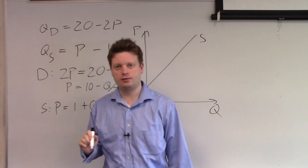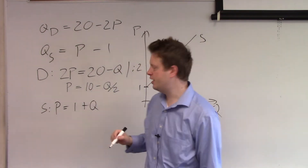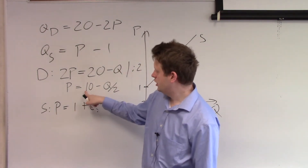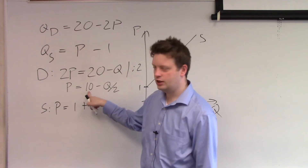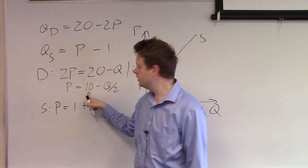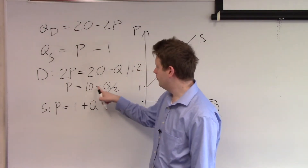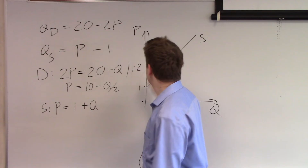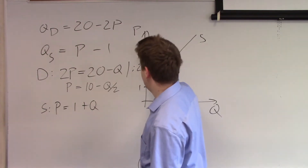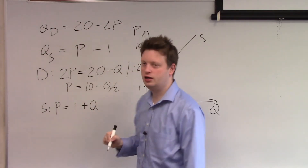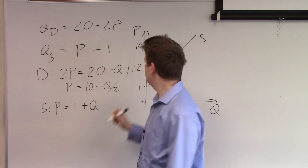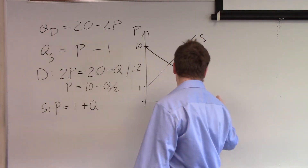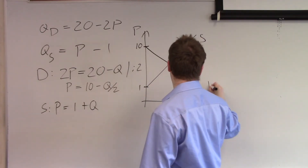We can do the same argument with demand. Demand has an intercept of 10 and a slope of minus one half. So we start at 10 here and we have a downward sloping demand.